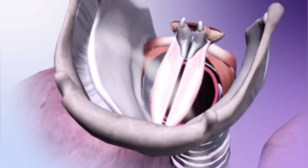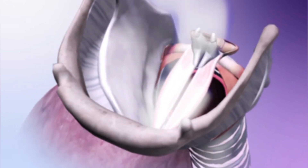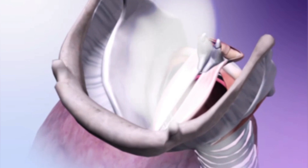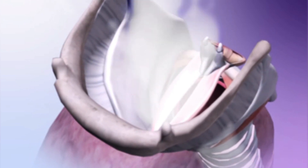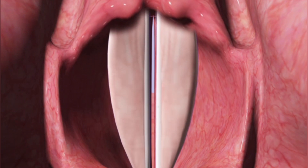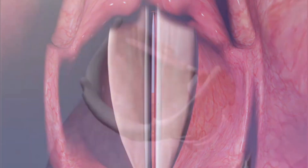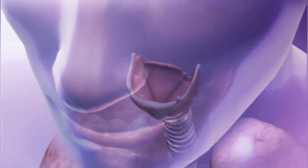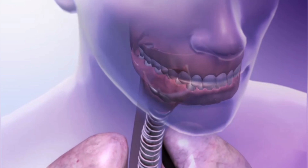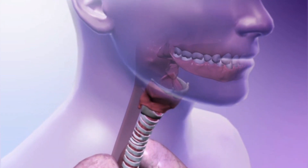Sounds can also be altered by other factors. High pressure creates louder sound. Shorter folds produce lower-pitched sounds, and longer folds produce higher pitch. Structures in the oral and nasal cavities can also modify the sounds produced by the vocal folds.